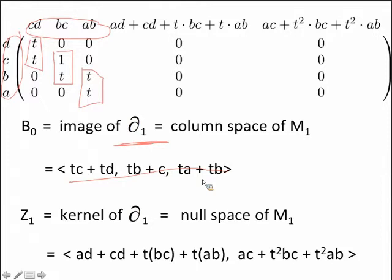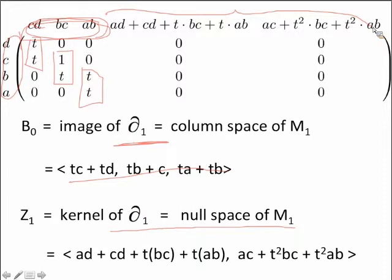We can also calculate the kernel — that's just what goes to zero. Since these columns are linearly independent, any linear combination of these first three columns won't go to zero, but any linear combination of these last two columns will go to zero. So our null space is just generated by these last two columns.